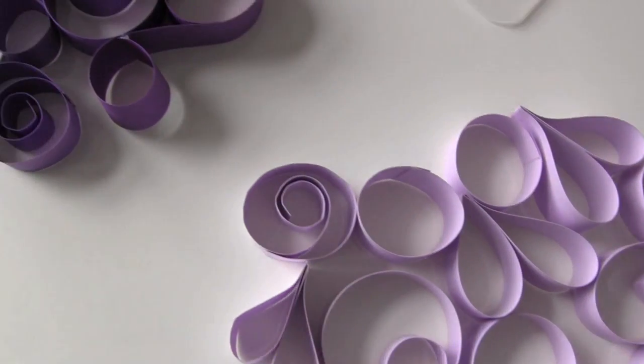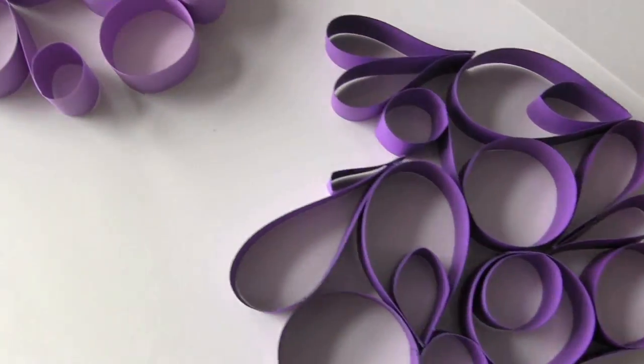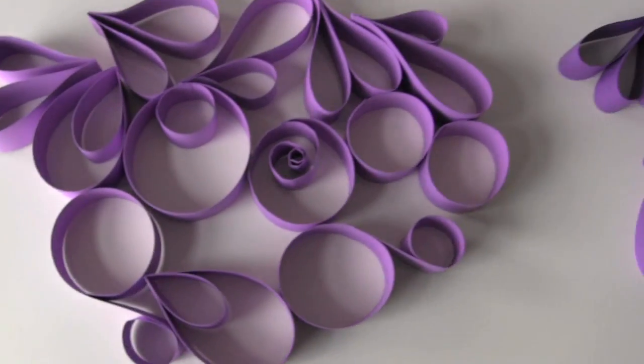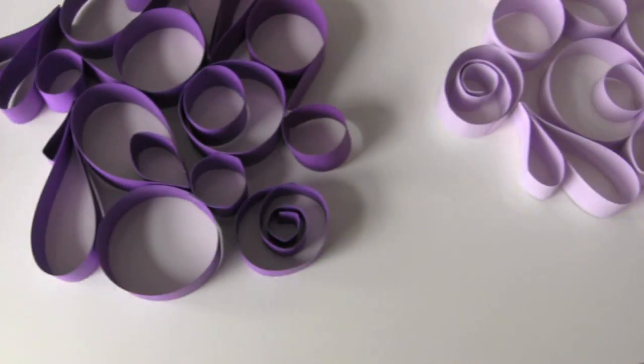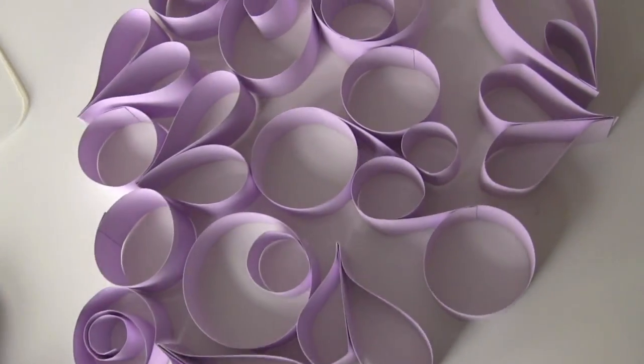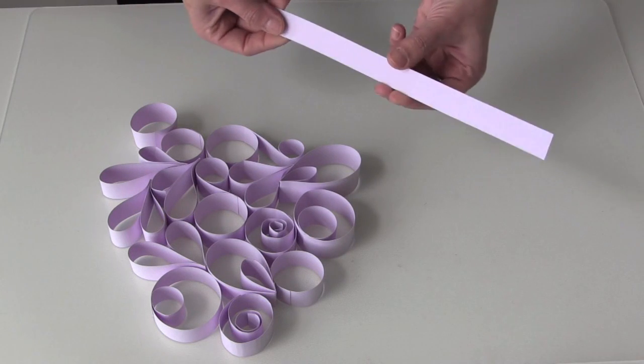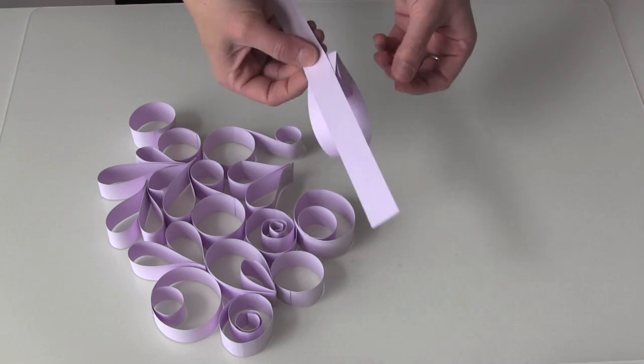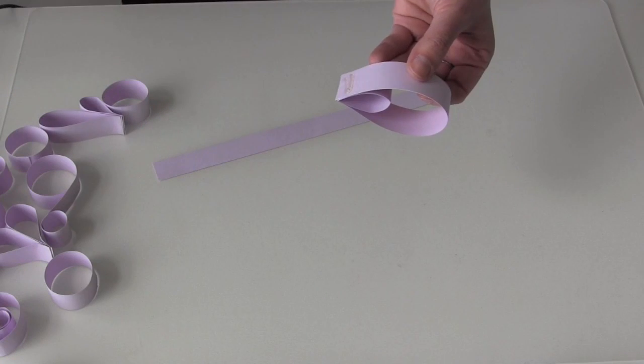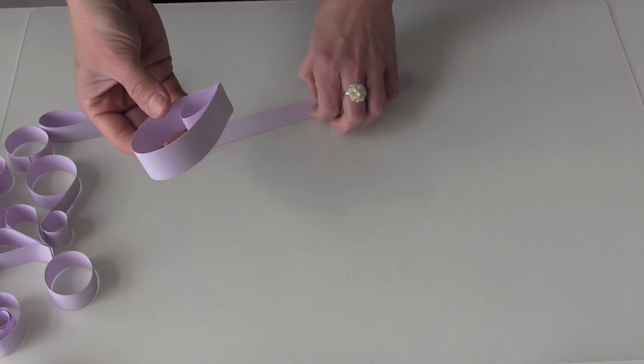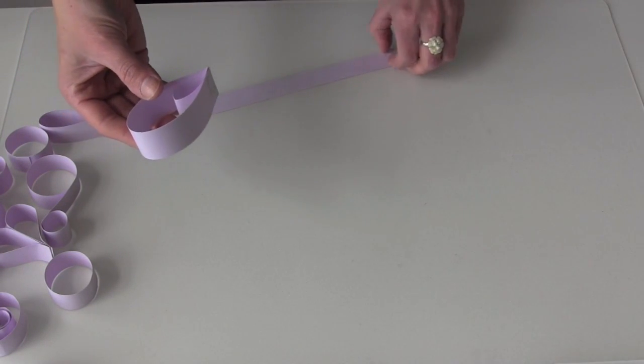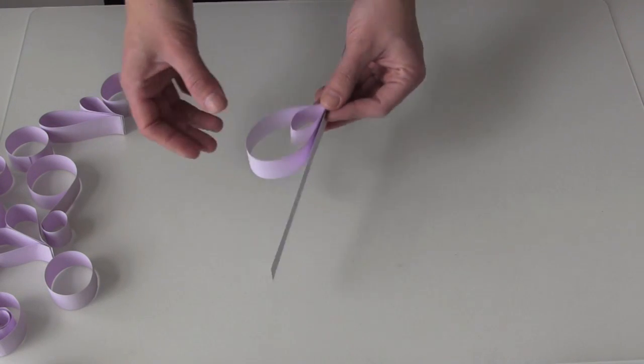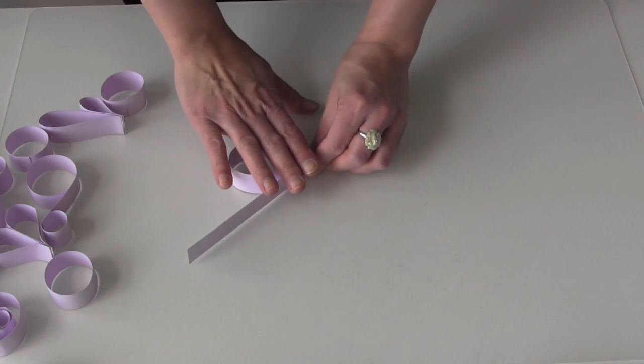Now that we have all of our pieces together in all the colors that you want to use, we can go ahead and assemble this. So now you're going to want to grab that extra strip of paper that you cut in the beginning. And we're going to start putting the pieces on with hot glue. And for this you basically are just going to eyeball where you want your pieces to go. So there's no specific pattern.